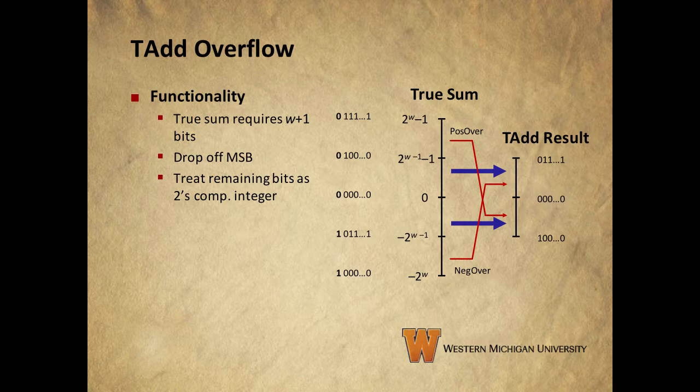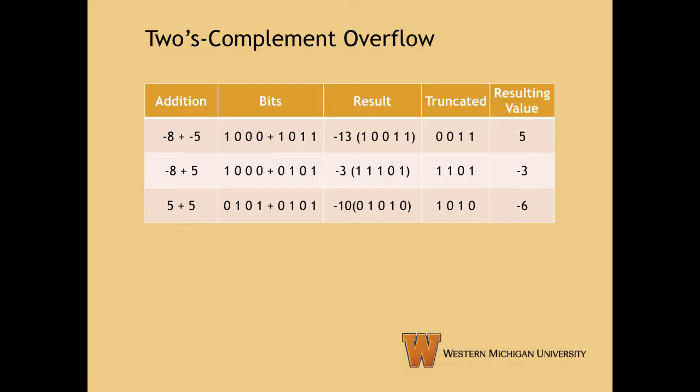However, this can end up with our signs doing things that we need to be aware of. Row one shows us a case in which the overflow bit is a one, and dropping it changes the sign and the value of our result. Negative eight plus negative five actually results in negative thirteen, but by dropping the carry bit, we end up with an answer of positive five.